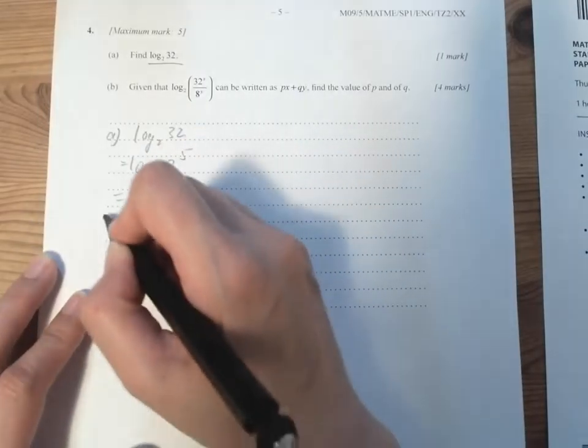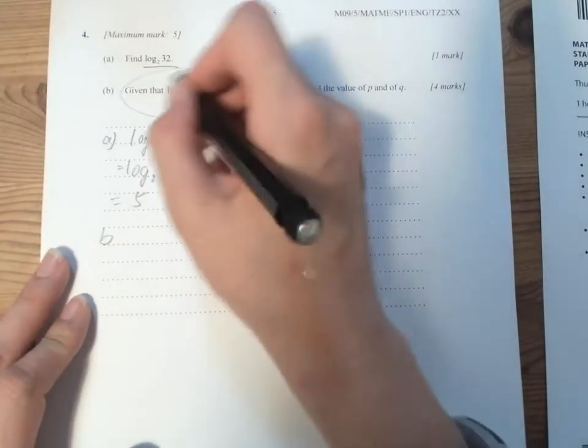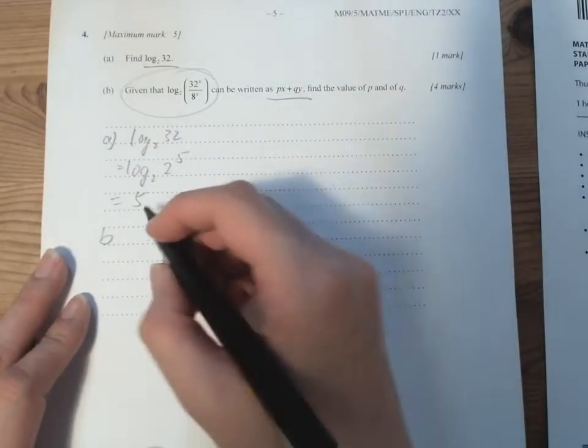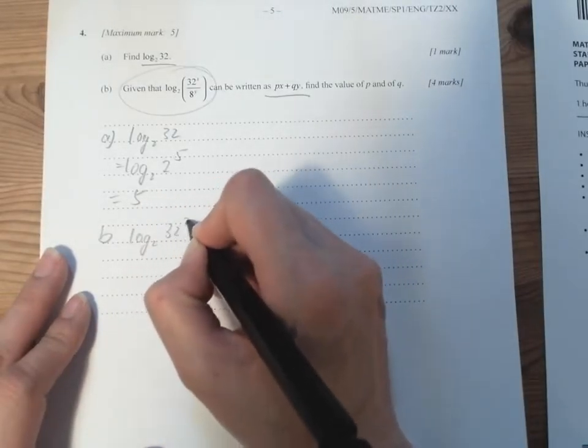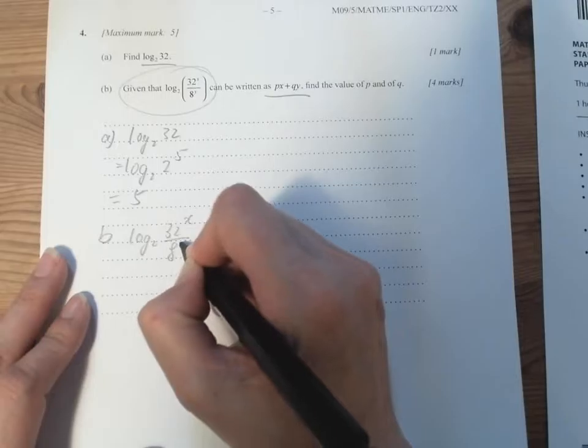And for b, we got this bit. So we're going to expand it like this. So we have log 2, 32x over 8y.